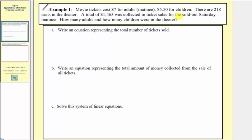There are three parts to this question. Part A: write an equation representing the total number of tickets sold. Part B: write an equation representing the total amount of money collected from the sale of all tickets. And finally, Part C: solve the system of equations and answer the question.